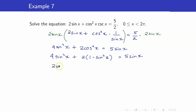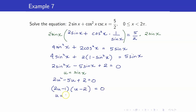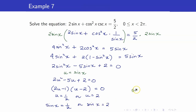Let's simplify this. This is now quadratic in form, so we let u equal sine x. We have 2u squared minus 5u plus 2 equals 0. This factorizes as 2u minus 1 times u minus 2. Therefore, u equals 1 half or u equals 2. Switching back to x, sine x equals 2 is impossible because the range of sine must be between negative 1 and 1.